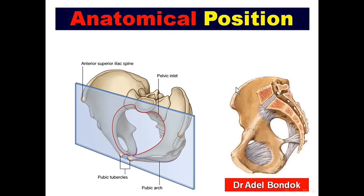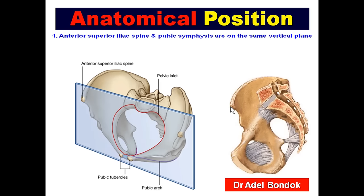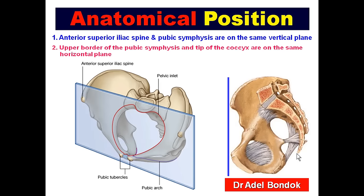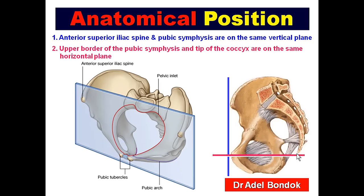Regarding the anatomical position of the pelvis: the anterior superior iliac spine and the pubic symphysis are on the same vertical plane, and the upper border of the pubic symphysis and the tip of the coccyx are on the same horizontal plane.